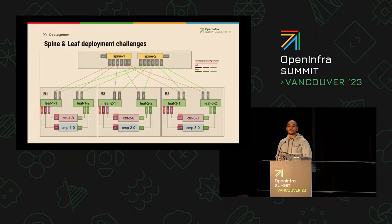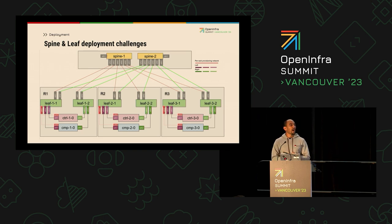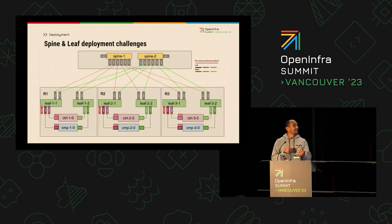About Spine and Leaf deployment challenges — you already know that, there is nothing new. Spine and Leaf deployments are somehow common now. We do have some challenges on the controller side, because we have to replace all the Layer 2 mechanisms with Layer 3 capability mechanisms to deploy the controller nodes on three different sites. On the compute side, that's somewhat easy to do as well. The actual challenge is about the top-of-rack configuration and how we integrate all of that. We could go with uncivil networking, but sometimes it's not enough.